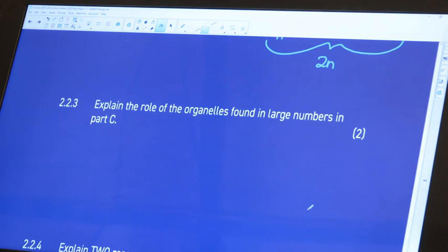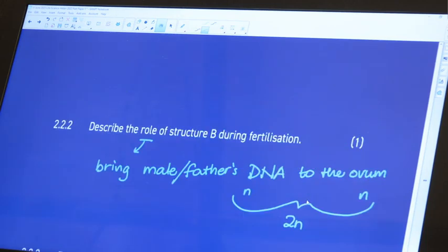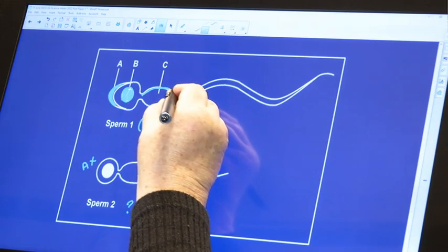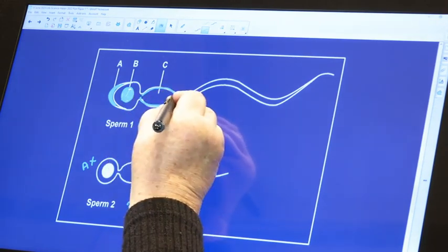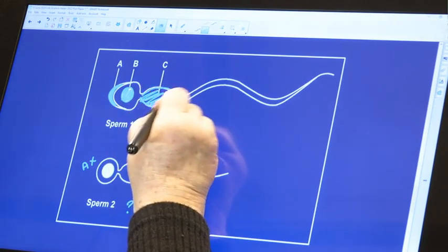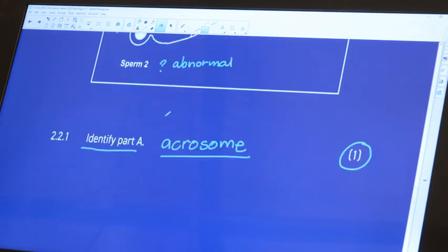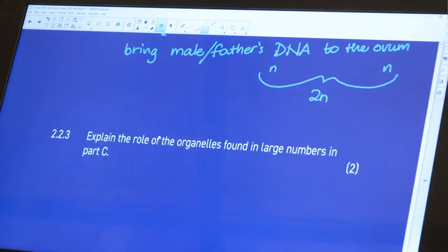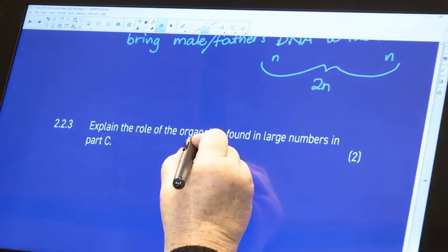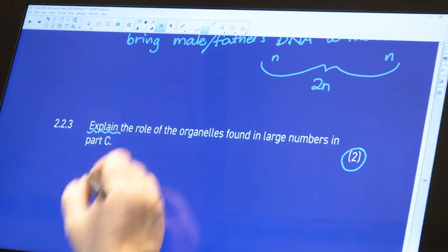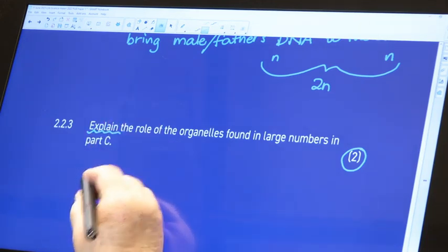Explain the role of the organelles found in large numbers in Part C. Going back to Part C, we see that Part C is the neck. And we've in fact already spoken about the function of the neck. The neck has lots of mitochondria. This is out of two and we have to explain.